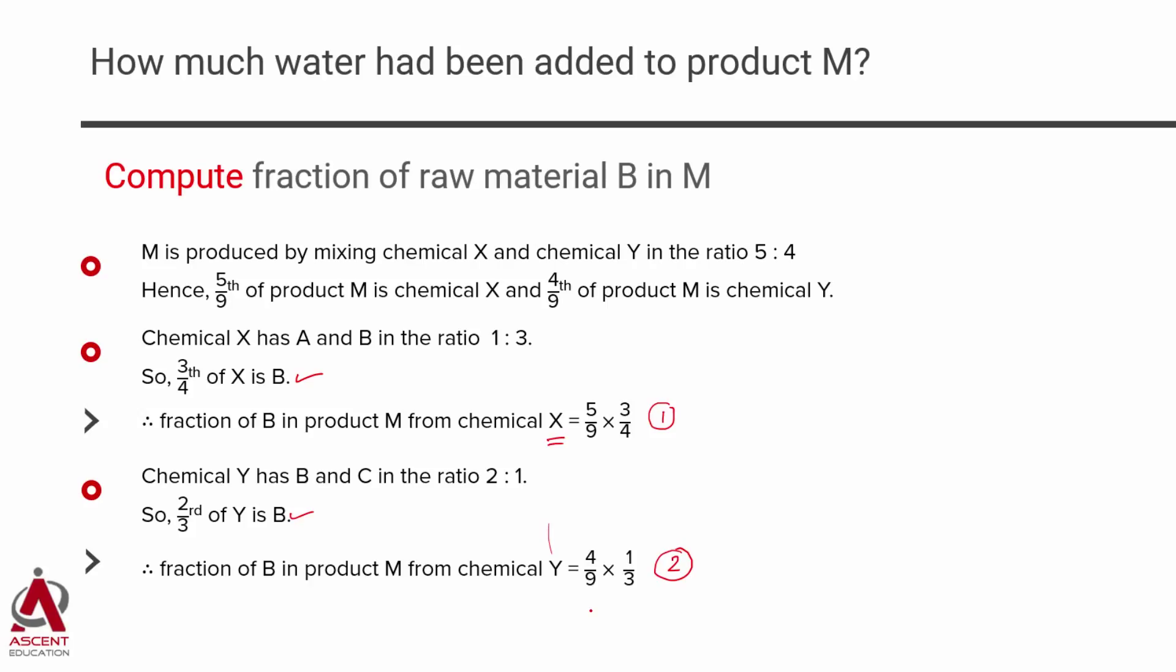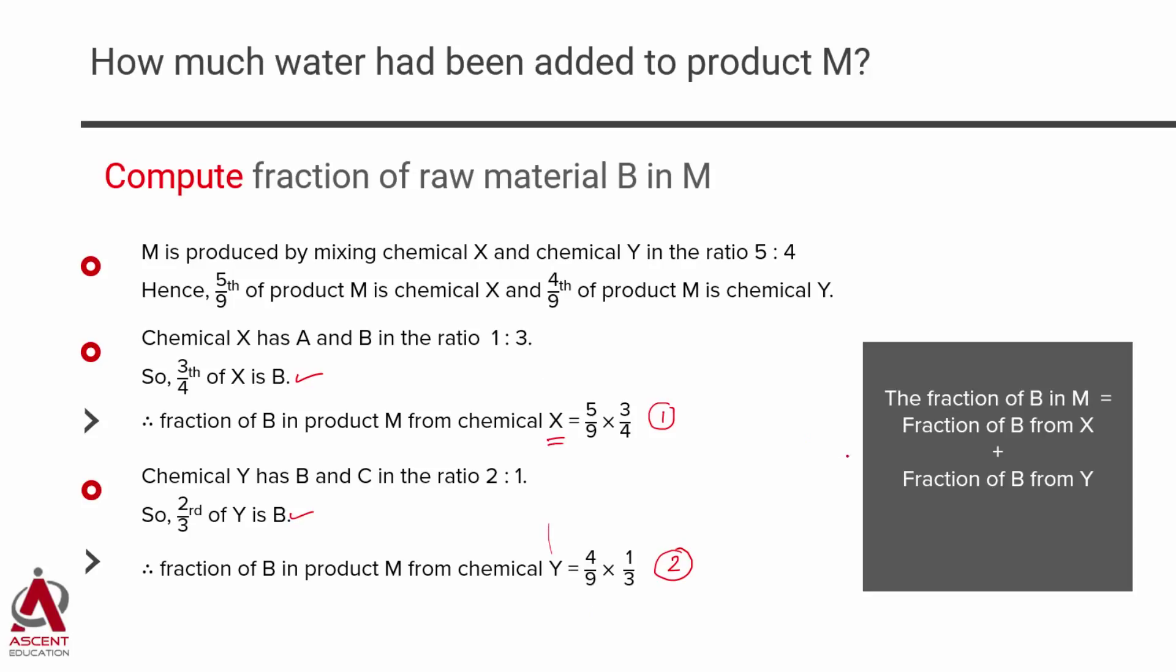So, this is the amount of B that you will find in M which has been contributed by chemical Y. So, how much B will be totally available in M? It's a sum of 1 and 2. So, fraction of B in M is a fraction of B from X and the fraction of B from Y which is essentially these two numbers. Add these two and take the common denominator and add it up. This results in that 77 by 108 of M is equal to B. In other words, if I have 108 units of M, 77 units of that is going to be B. That's what this basically boils down to.